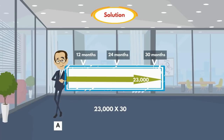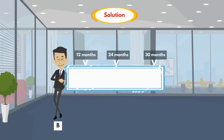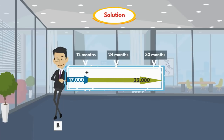B invested 17,000 at the start and after one year he made an additional investment of 5,000. So B's investment is 17,000 for 12 months and 22,000 for 18 months. We represent this as 17,000 × 12 + 22,000 × 18.